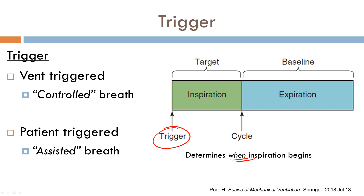Now let's get familiar with controlled breaths and assisted breaths. The difference between them is the trigger variable. If you have a controlled breath — a ventilator-triggered breath — the trigger variable is time. For example, if you have a respiratory rate of 12 breaths per minute and the patient is deeply sedated, five seconds will go by and the ventilator will trigger a breath. You will get a controlled breath because time is your trigger variable.